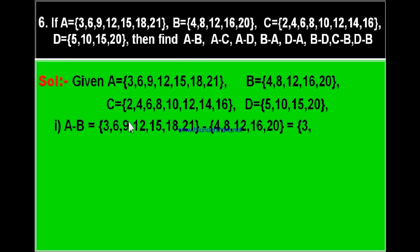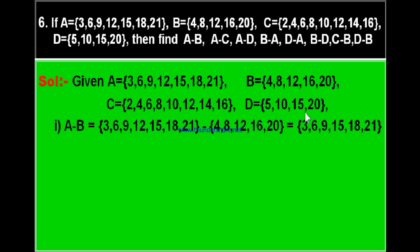Let us find A minus B. Write set A first, then minus set B. Elements present in A only: 3 is not in B — write 3. 6 is not in B — write 6. 9 is not in B — write 9. 12 is in B — don't write it. 15 is not in B — write 15. 18 is not in B — write 18. 21 is not in B — write 21. Therefore A minus B equals {3, 6, 9, 15, 18, 21}.